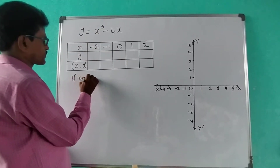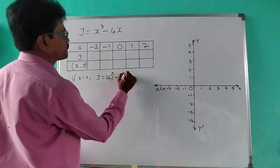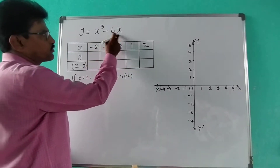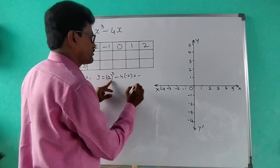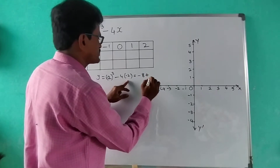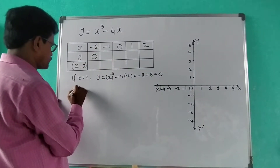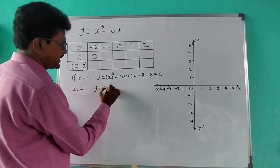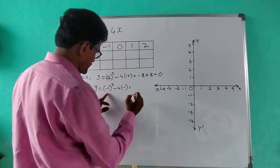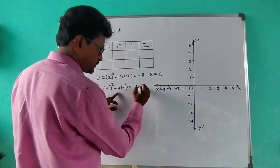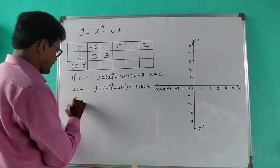If x = -2, then y = x³ - 4x = (-2)³ - 4(-2) = -8 + 8 = 0. If x = -1, then y = (-1)³ - 4(-1) = -1 + 4 = 3. If x = 0, then y = 0³ - 4(0) = 0.